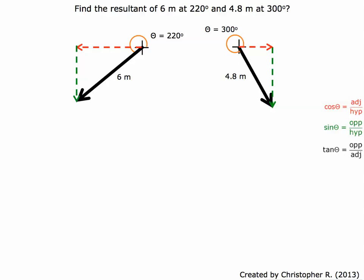The next thing we need to do is find the components — what are the components in the x-direction and the y-direction? For the left one here, we're going to use the cosine function. Six meters times cosine 220 is negative 4.6 — the negative means it's going in the left direction. On the right one, we've got 4.8 times cosine of 300, and when you put that into your calculator you get positive 2.4, so that means it's going in the right direction.